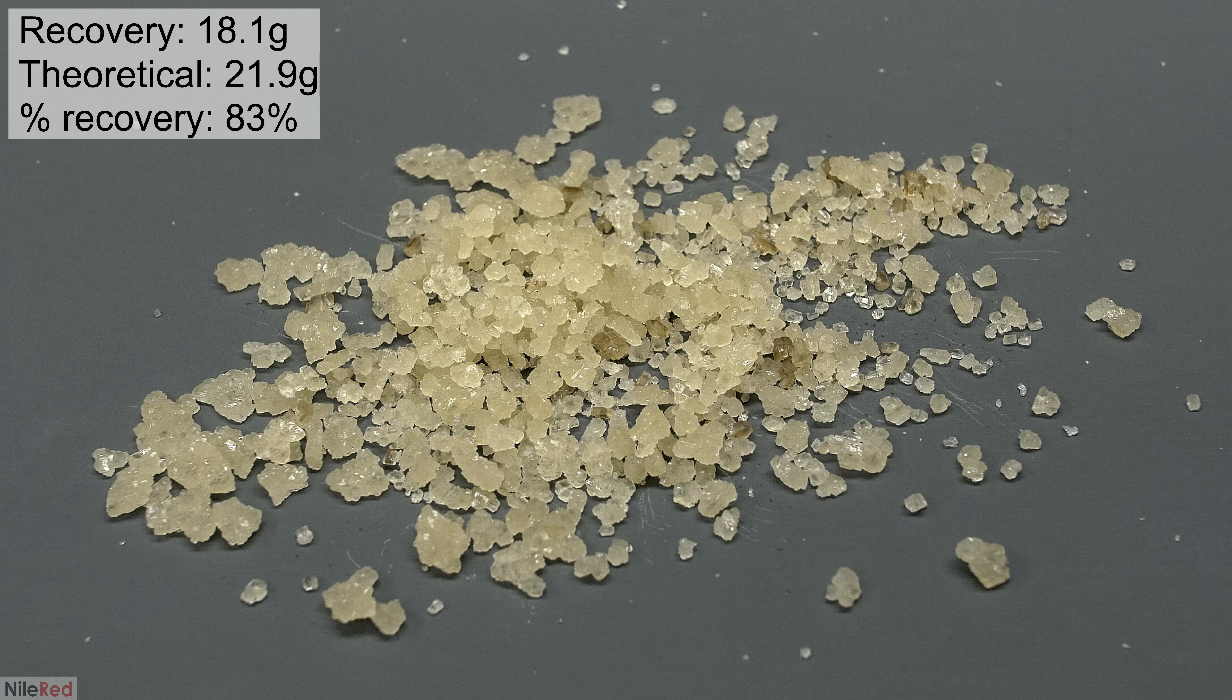In total I recovered 18.1 grams of crude citric acid. A paper I found online claimed that lemon juice has about 1.44 grams of citric acid per ounce. I started with 450 milliliters so the theoretical amount that should be present is about 21.9 grams. From this number I can calculate my percent recovery and it comes out to be 83%.